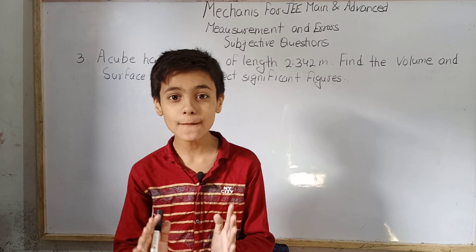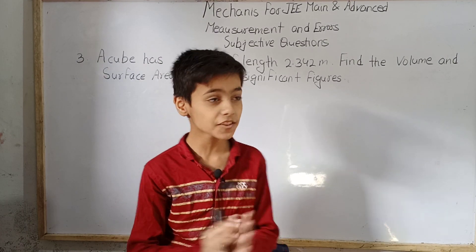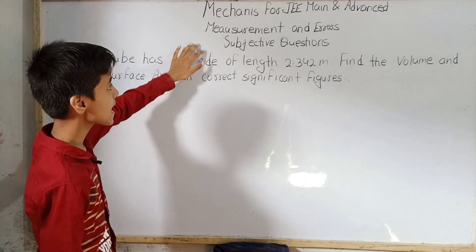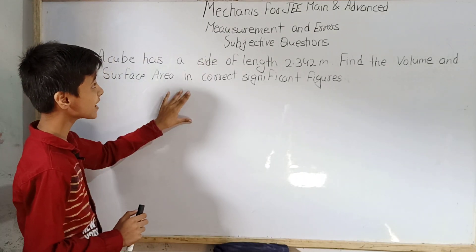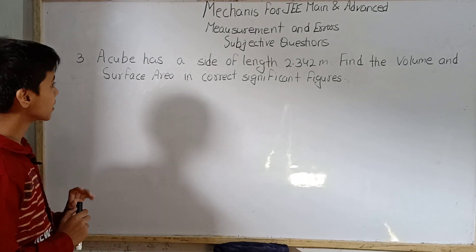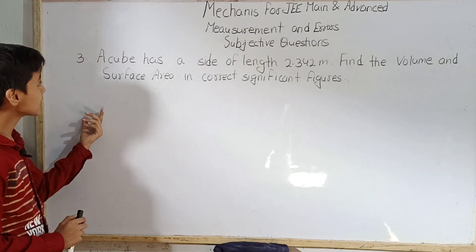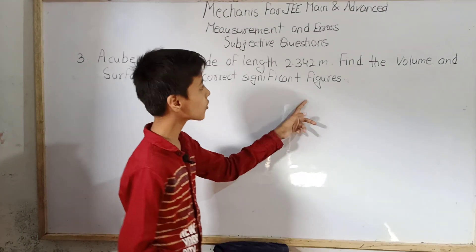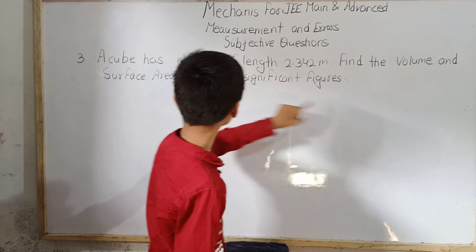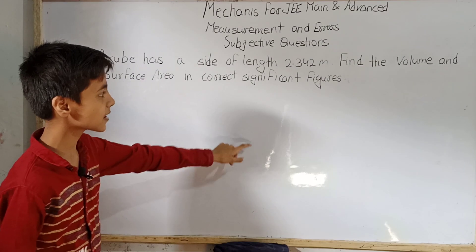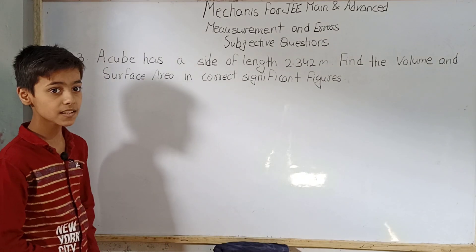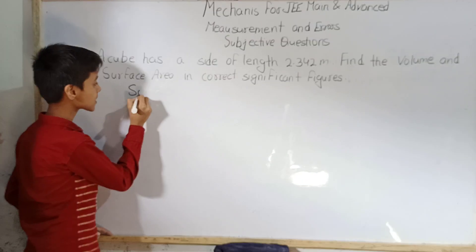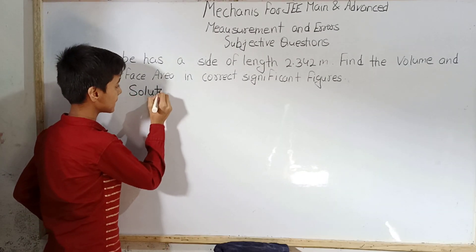Hello students, I am Sarim Khan, studying fifth standard, and today we have mechanics for JEE Main and Advanced — measurement and error subjective questions, question number three. The question asks us that a cube has a side of length 2.342 meters; find the volume and surface area in correct significant figures. Now we'll begin to solve it.